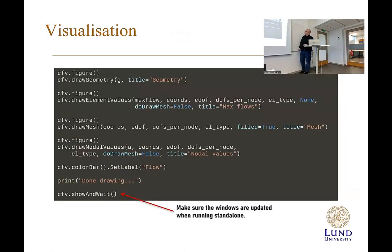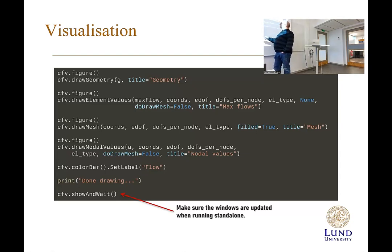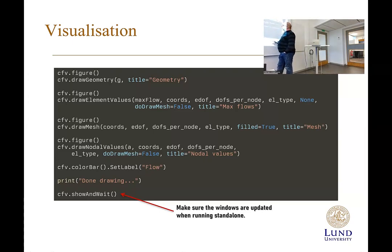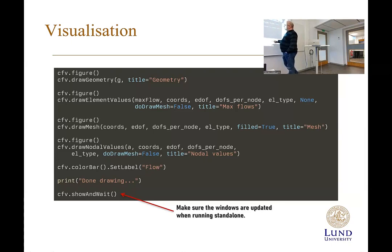Then we do some visualization. There is a command to draw the geometry in a matplotlib window. We have draw_element_values to color each element by a single color using the element flows, coordinates, EDOF, dofs per node, and element type. We also have draw_mesh using coordinates and EDOF, and draw_node_values to visualize the temperature field. Finally we call show-and-wait to enable the display.